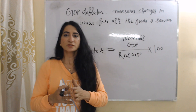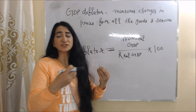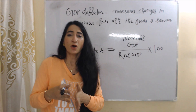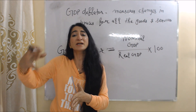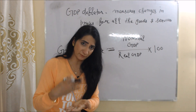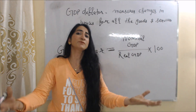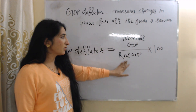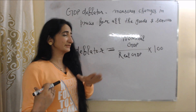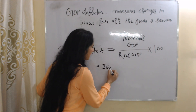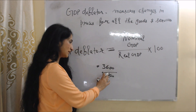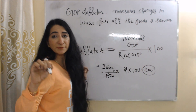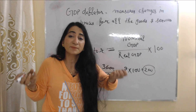Now we will see GDP deflator. What is GDP deflator? GDP deflator measures changes in prices of all goods and services, or we can say that GDP deflator basically shows the impact of inflation. Nominal GDP has an impact of inflation, whereas real GDP is adjusted for inflation. That's why the formula of GDP deflator is: nominal GDP divided by real GDP, multiplied by 100. Our nominal GDP was 3600 and real GDP was 1800, so 3600 over 1800 equals 2, and 2 multiplied by 100 equals 200. So we can say there is a 100% increase in price.